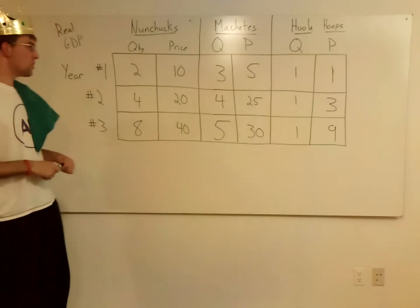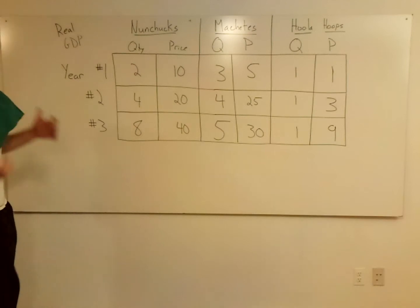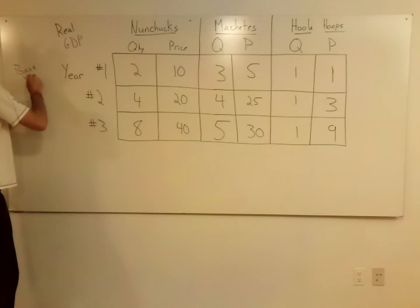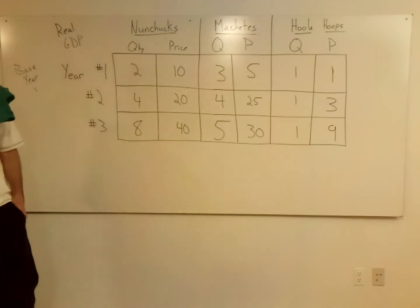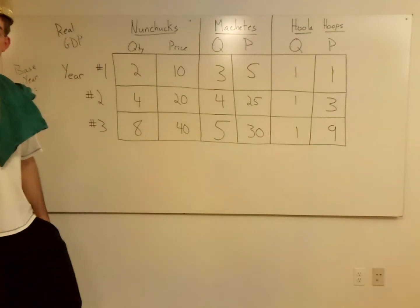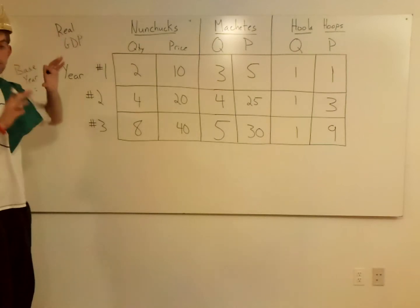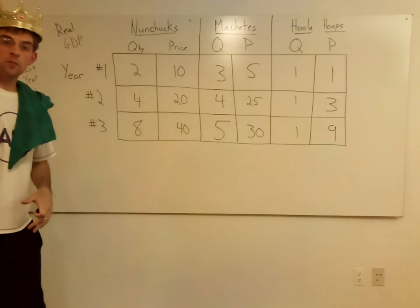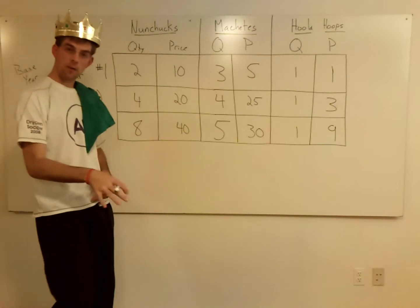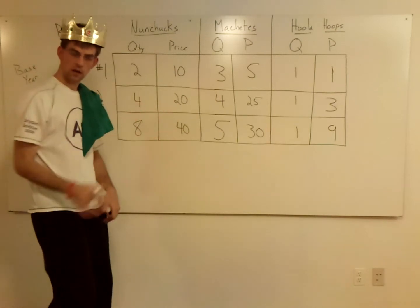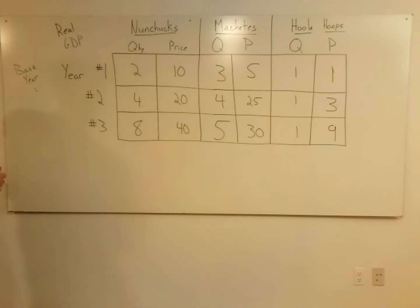Because you need a base year. You need to know what year is the base year, because this year is going to tell you what price to use. In real GDP we're keeping the prices constant so that we can see without a doubt what is happening to our level of productivity — what's happening to our quantity numbers.